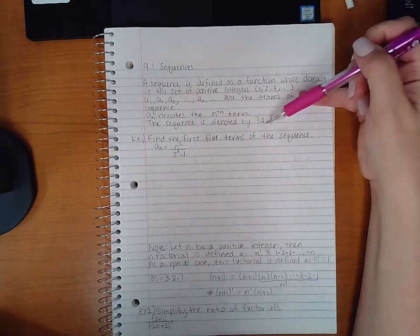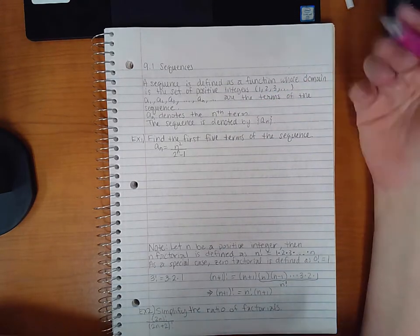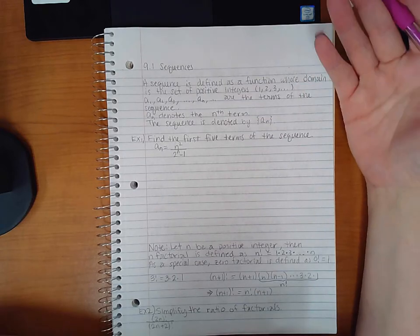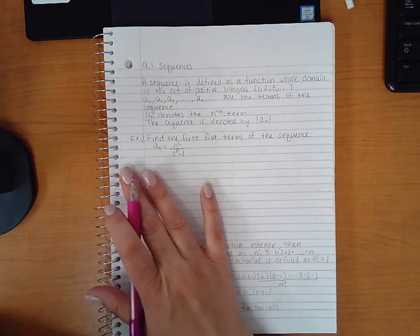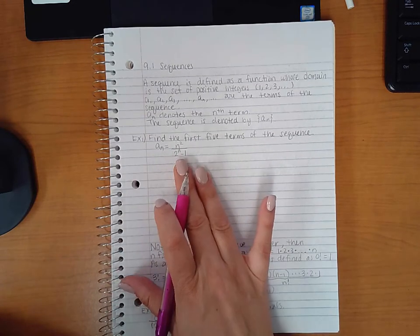The entire sequence is denoted by this. So the nth term kind of gives you the formula to find each individual term. So for example 1, it says find the first five terms of the sequence where AN equals this.